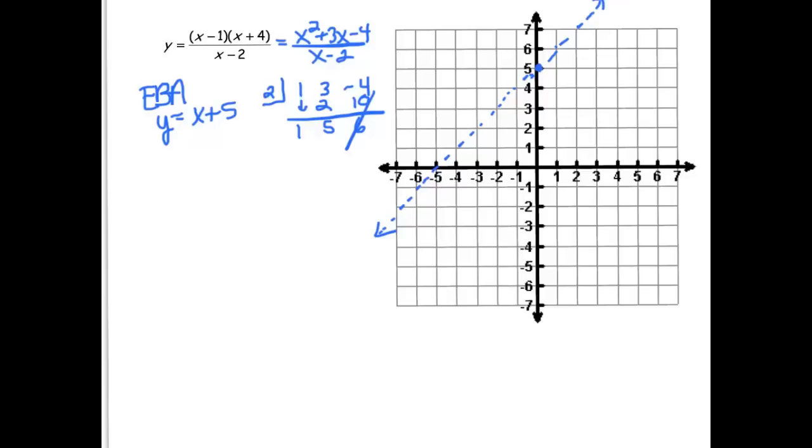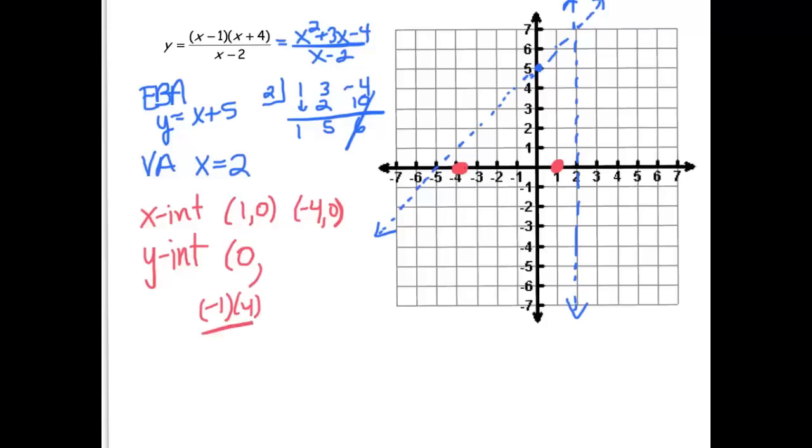Okay, next up, discontinuities. So no factors are the same in the numerator and denominator, so there are no holes. That leaves us with a vertical asymptote, and again, I'm looking at just the denominator for that, and that would be x equals 2. That would make our denominator 0. Alright, next up, let's find some points. Let's start with x intercepts. What makes the numerator 0? That would be 1 and negative 4. And how about a y intercept, plug in 0. We would get negative 1 times 4 over negative 2, so that would be positive 2.